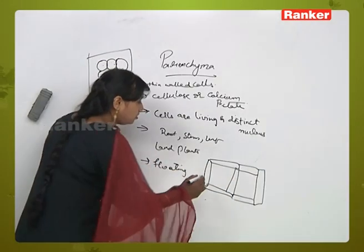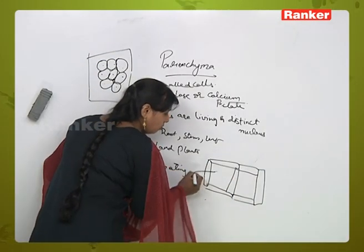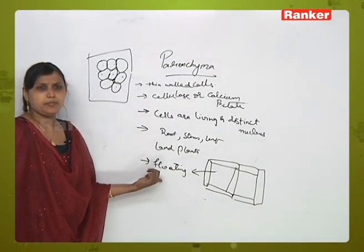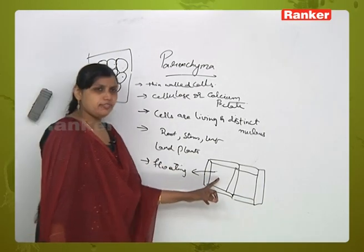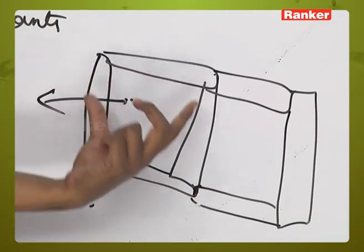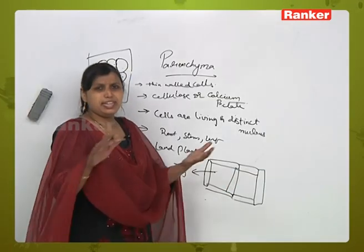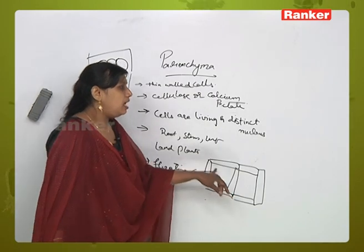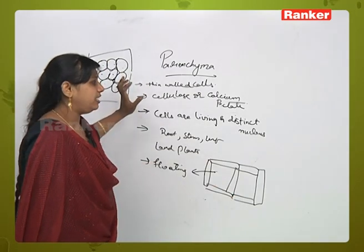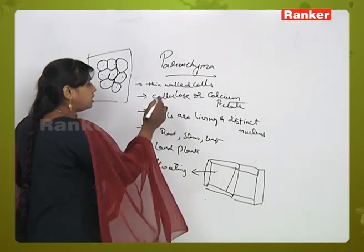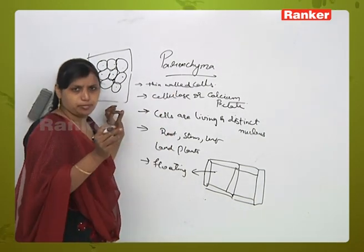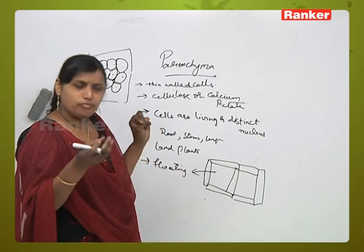In floating or hydrophytic plants, the parenchyma tissue will have air spaces which are much larger than the cells. This helps in maintaining the air balance of the plant. Parenchyma is again differentiated into different types depending upon its structure and function.